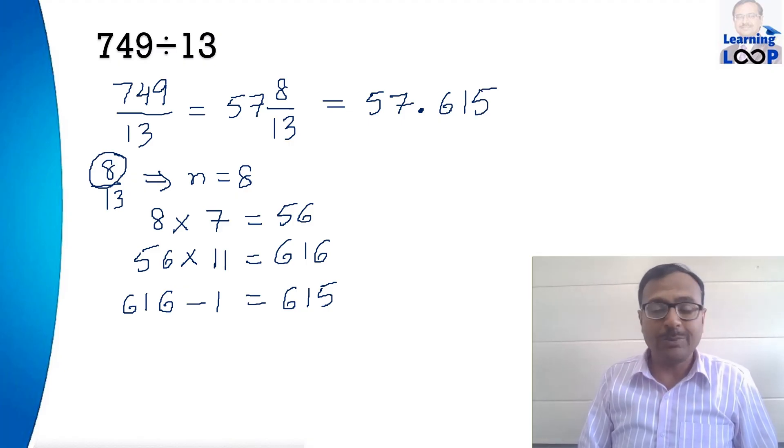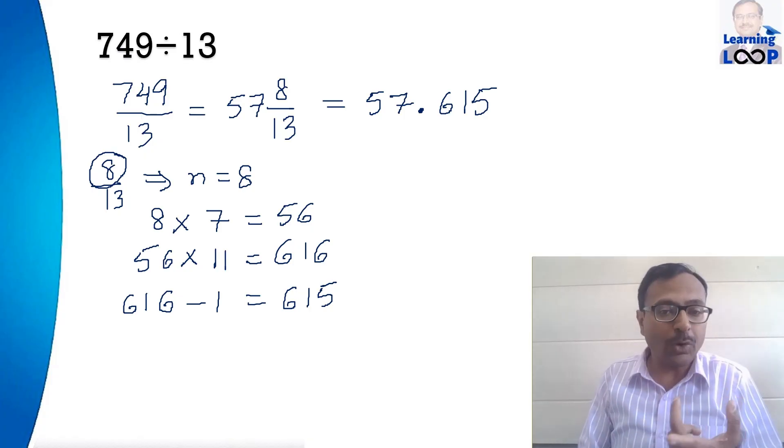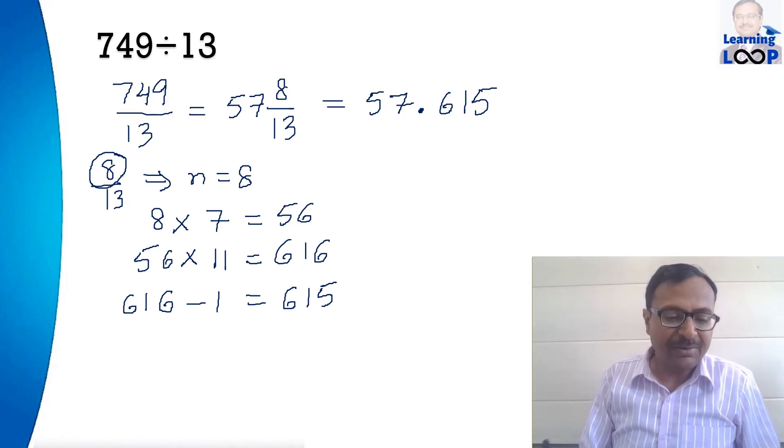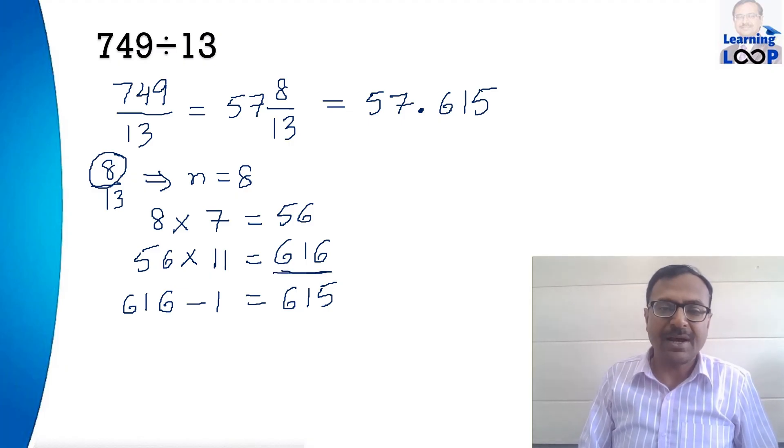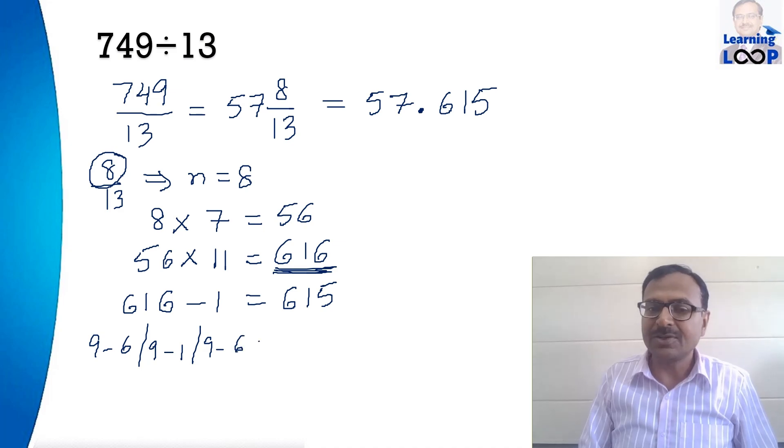And surprisingly this 615 will be the first three digits after decimal in the quotient. Now you may stop here if you don't want more digits but if you want three more digits then we just have to take the 9's complement of the number that is the 9's complement of 616. How do you take the 9's complement? 9 minus 6, 9 minus 1 and 9 minus 6 again. So that is 383.